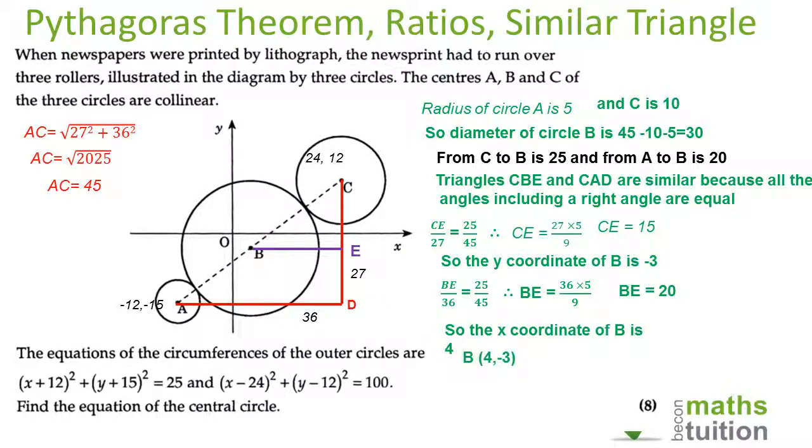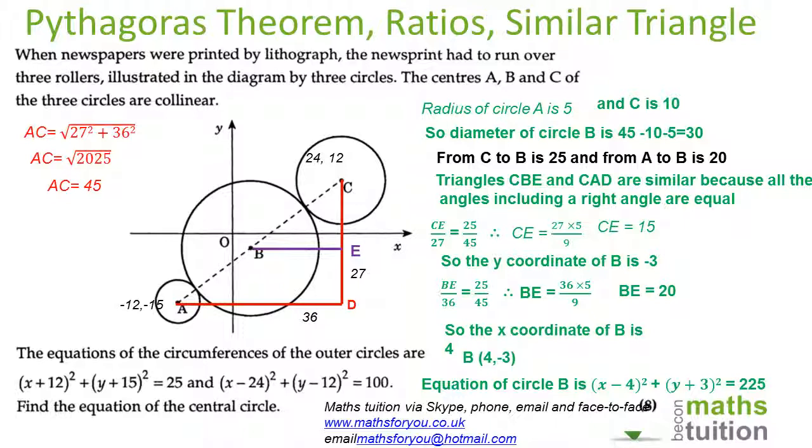The coordinates of circle B is (4, -3), so the equation of circle B is going to be (x - 4)² + (y - (-3))², which is (y + 3)², is equal to 225. 225 is 15 squared, and that's what's required.